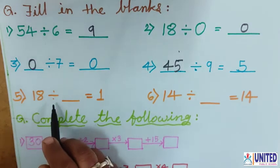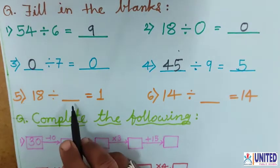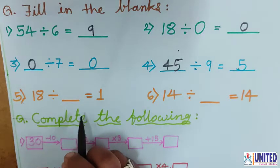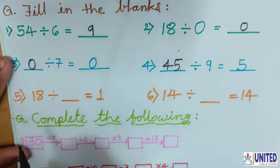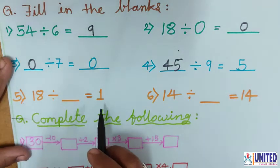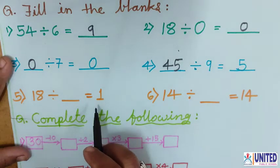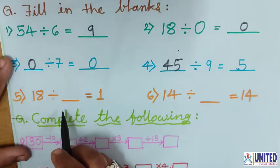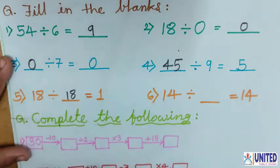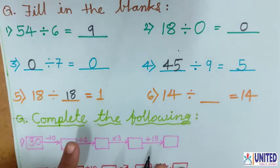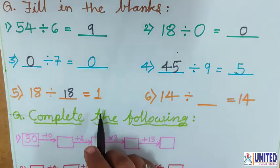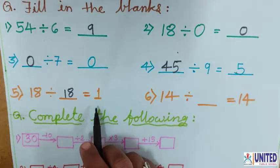Now number 5: 18 divided by blank equals 1. The divisor is missing. If the quotient — that means the answer of division — is 1, at that time the divisor is the same as the dividend. If we divide any number by the same number, the answer always comes 1.